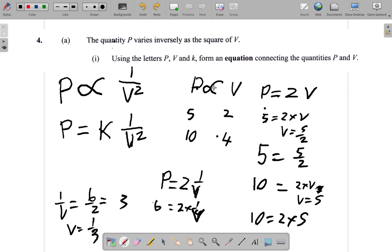And that will lead to the second part of this equation. But the equation that we want is this: P equals K multiplied by 1 over V squared.